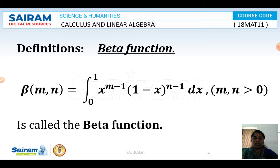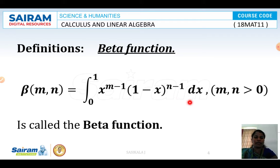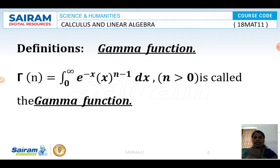The definition of the beta function: beta of m comma n is defined as the integration from 0 to 1 of x power m minus 1 into (1 minus x) whole power n minus 1 dx, where m and n are greater than 0. This is called the beta function. The gamma function: gamma of n is equal to the integration from 0 to infinity of e power minus x into x power n minus 1 dx, where n is greater than 0. This is called the gamma function.